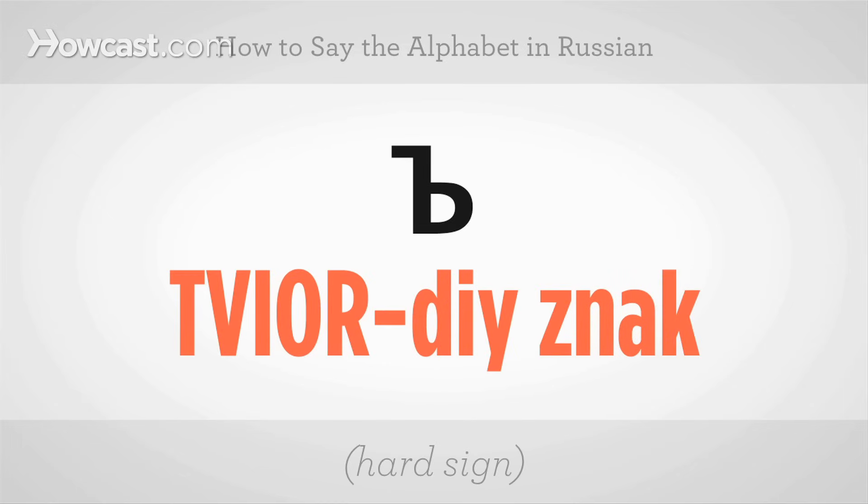This letter is called твёрдый знак, which means hard sign. The accent in the first word falls on the first syllable. Твёрдый знак.